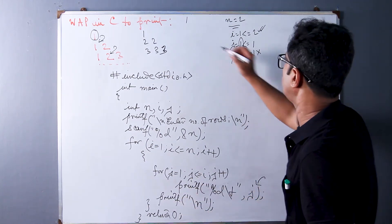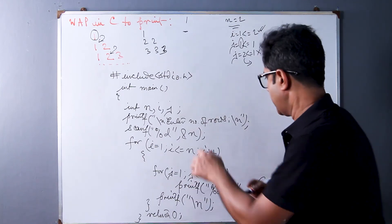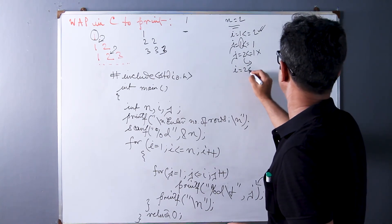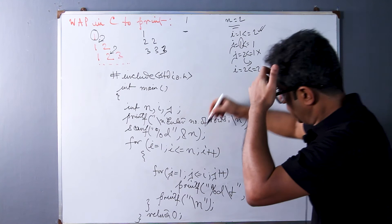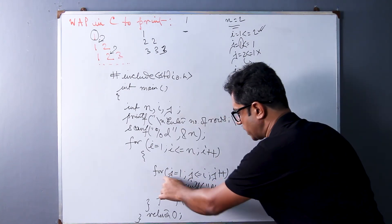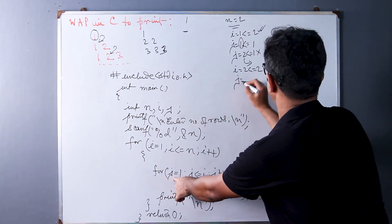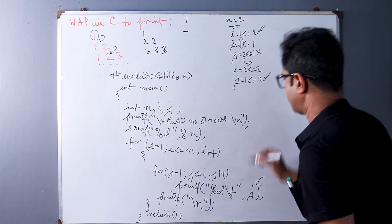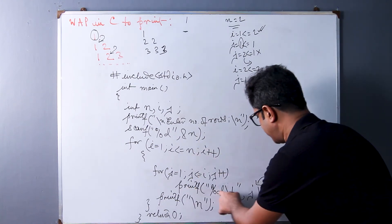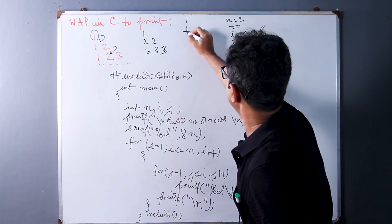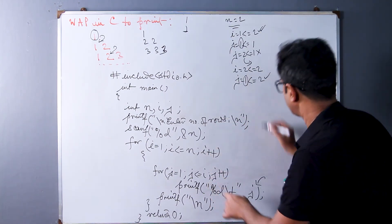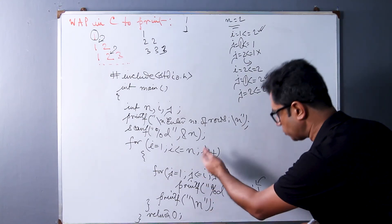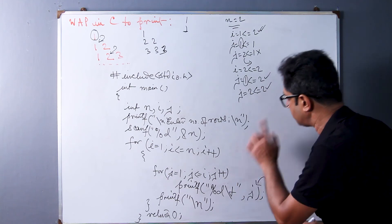We execute printf newline, moving the cursor to the next line. Then i is incremented to 2, which is less than or equal to 2, so we enter the outer loop again. j is re-initialized to 1; j <= i, where i is 2 — condition satisfied. We print j = 1, then increment j to 2, which is also <= 2, so we enter the inner loop again.